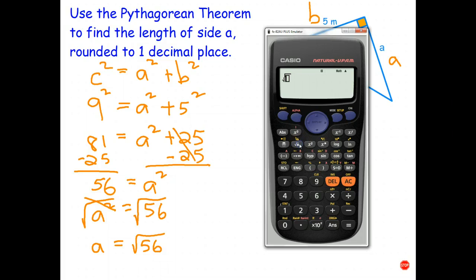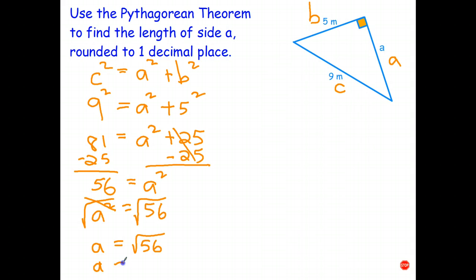And on the calculator, square root of 56 is 7.483. Rounding to one decimal place. The 4 rounds up to a 5 because this number here is 5 or bigger. So round it off to one decimal place. 7.5. And the units are meters.